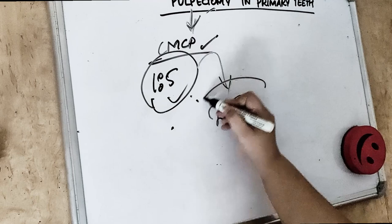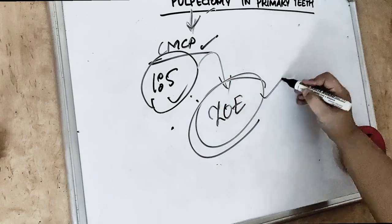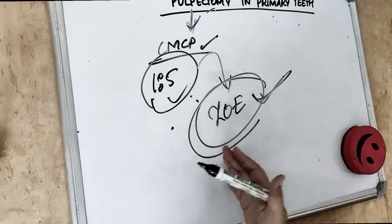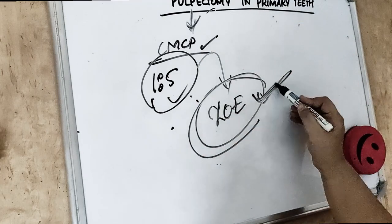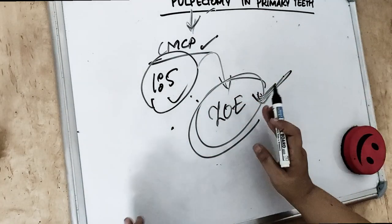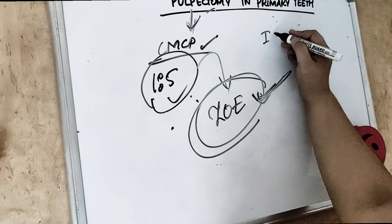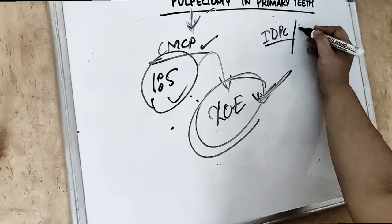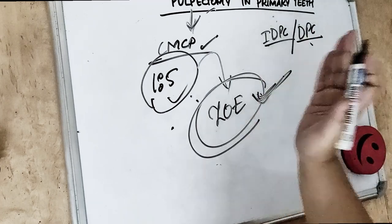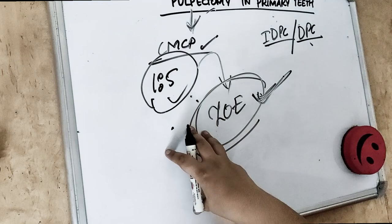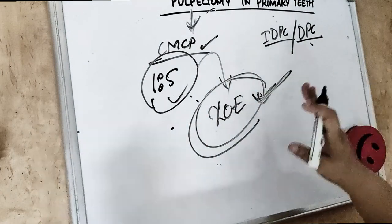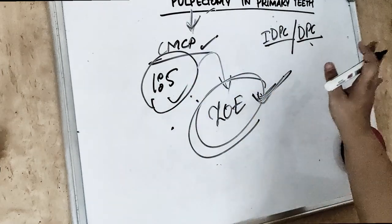ZOE is one of the most commonly used root canal filling materials for primary teeth. Importantly, calcium hydroxide is never used in primary teeth pulp — while we do use calcium hydroxide for IDPC and direct pulp capping, we do not place it anywhere in the pulp of primary teeth. Remember this clearly: calcium hydroxide is not used in the pulp of primary teeth.